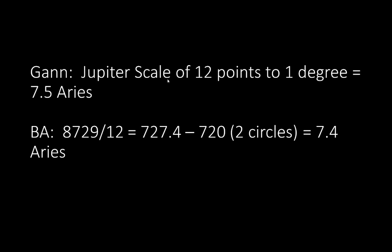Gann: Jupiter scale of 12. Think about that — Jupiter takes 12 years to make a circle. Gann uses the Jupiter scale of 12 points: 12 points to one degree equals 7.5 Aries. BA: 8,729 divided by 12 equals 727.4. Minus 720, which is two circles — mod out 360 again — equals 7.4 Aries. Gann's close here. See how he's doing that?